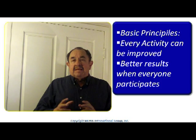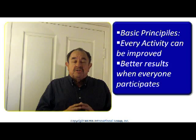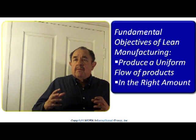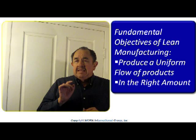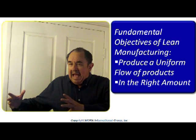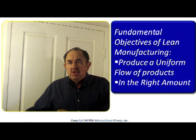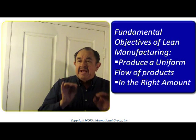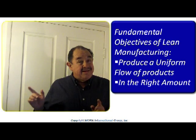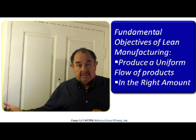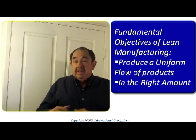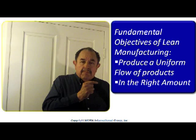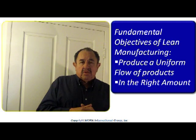Our next step is to analyze what are the fundamental objectives of lean manufacturing. Lean manufacturing is a process comprised of several strategies and disciplines that has the purpose of creating a flow of products — the most uniform possible flow of products that are made in the right amount, not fewer, not more than needed, either for our next customer, next workstation, or for the final customer. You need to produce that flow in the quantity that is necessary by the user or by the next station in your plant.